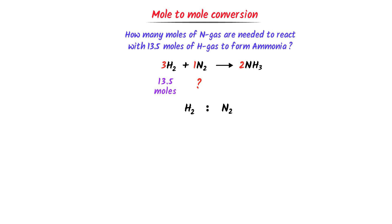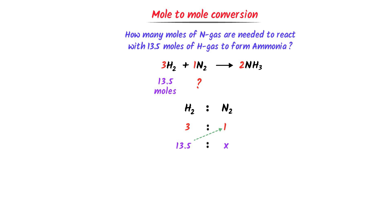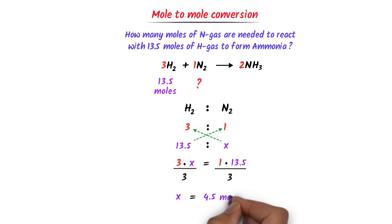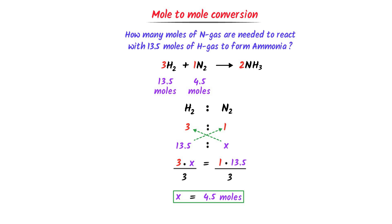I cross-multiply: 3x = 1 × 13.5. Dividing both sides by 3, I get x = 4.5 moles. Thus we need 4.5 moles of nitrogen to react with 13.5 moles of hydrogen. Note down this important conversion.